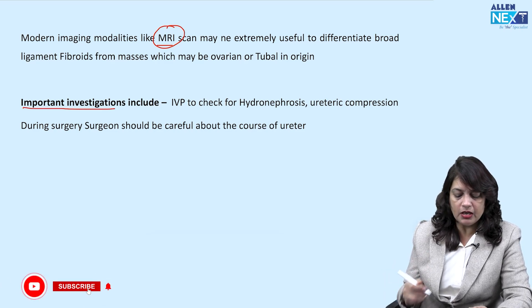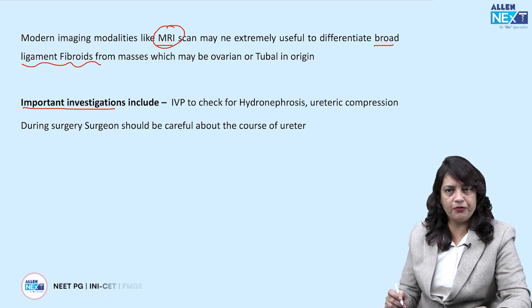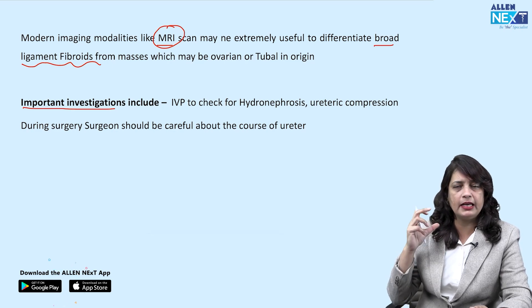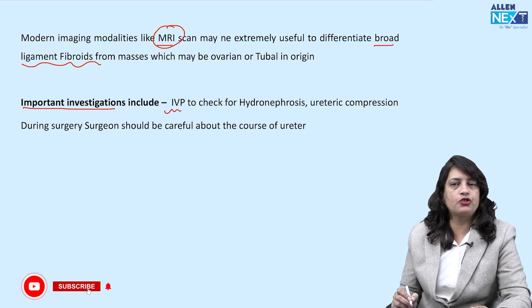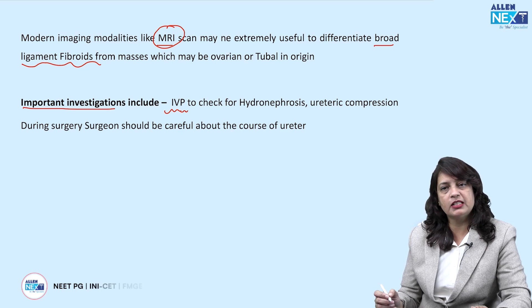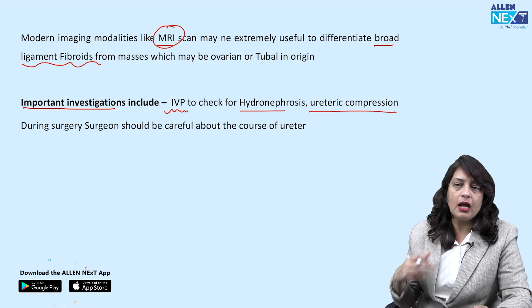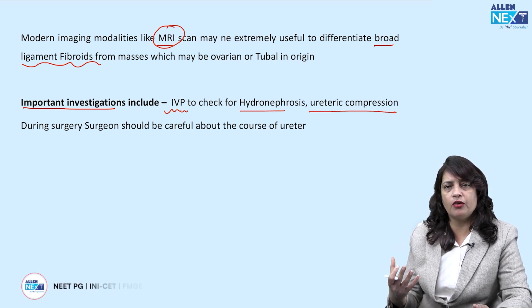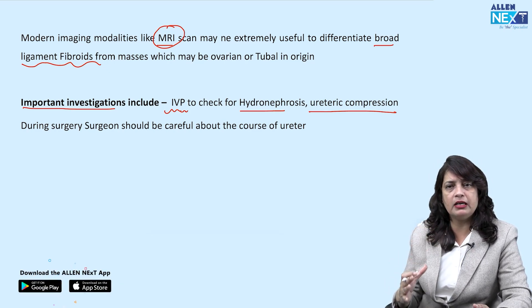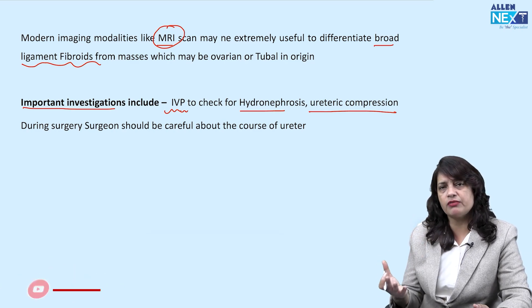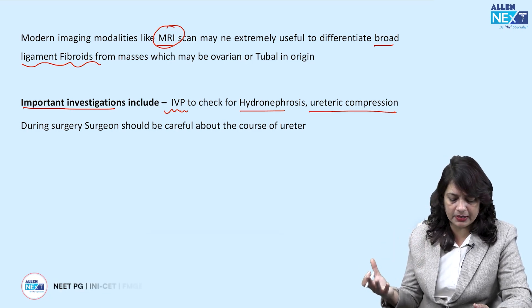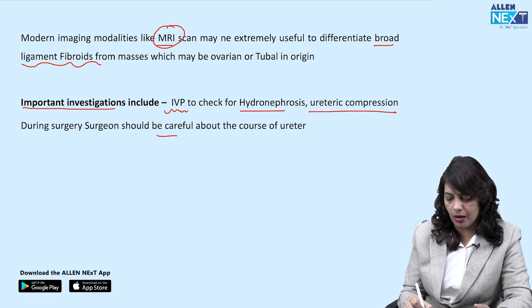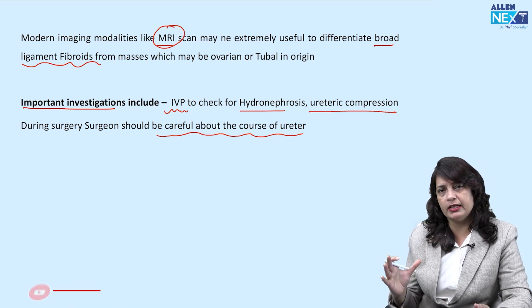If MRI confirms a broad ligament fibroid, an IVP (intravenous pyelography) must also be done with the patient's consent to check for hydroureter or hydronephrosis and ureteric compression. During surgery for such a huge mass — with two years of symptoms including bladder and bowel difficulty and increased urinary frequency — the surgeon must be very careful about the course of the ureter. The MRI scan report confirmed a very large mass arising from the pelvis.